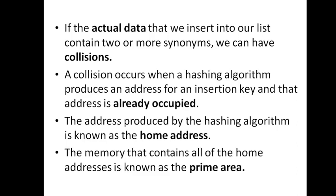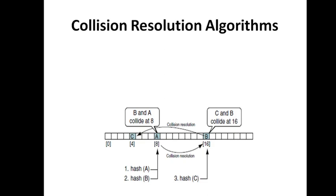The collection of home addresses is called the prime area. Collisions are the major problem of hash algorithms — every hash algorithm will face the collision problem, as multiple keys will map to the same address.